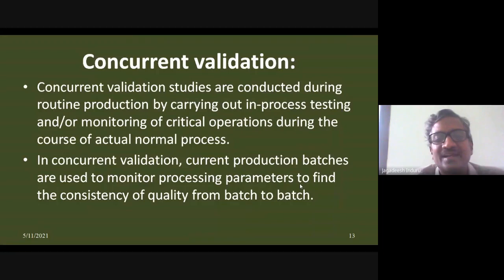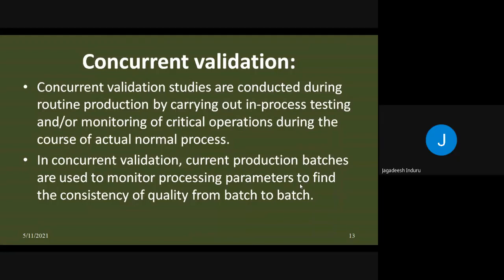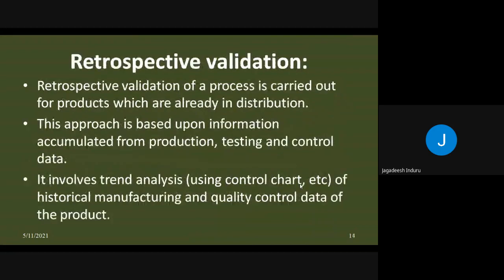Concurrent validation compares each batch against previous batches and dispatch data, measuring deviation against action limits and alert limits. If a batch approaches the alert limit, it signals something is going wrong. Action can be taken by interrupting the process, rectifying the part, replacing it, and continuing — this is part of concurrent validation, performed regularly. The third type is retrospective validation.